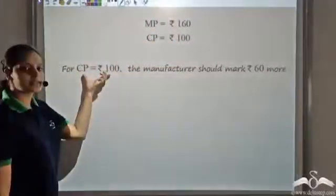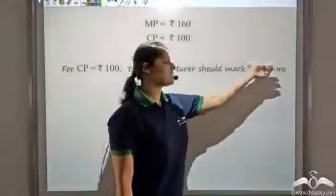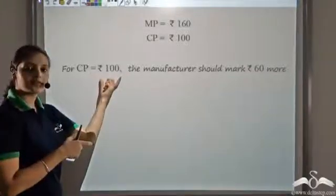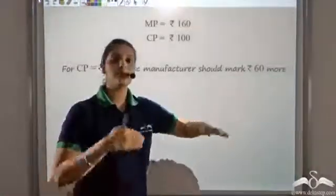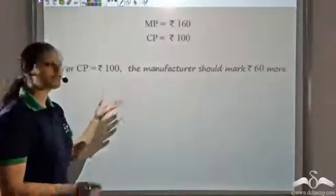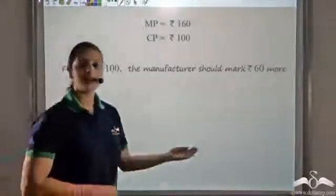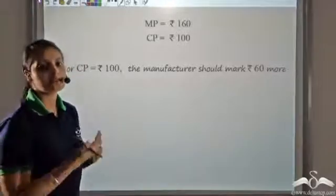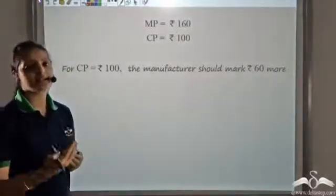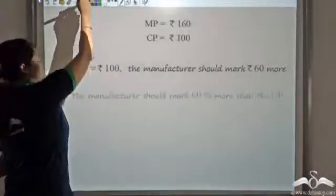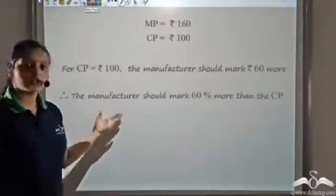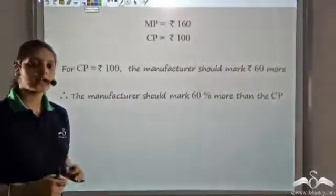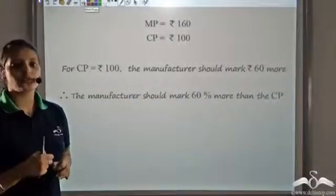For a cost price of 100, the marked price is 60 more. This means it is 60 per 100, or 60 percent more. So the manufacturer should mark his goods 60% more than the cost price, such that even after giving a discount of 25%, he still gains 20%.